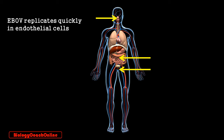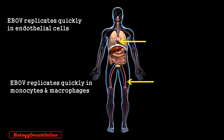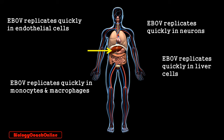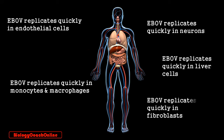EBOV attacks white blood cells like monocytes and macrophages — cardiovascular and immune system cells. It also attacks neurons of the nervous system, liver cells as part of the digestive system, and fibroblasts as part of the musculoskeletal system. So EBOV attacks and affects almost every system of the human organism.